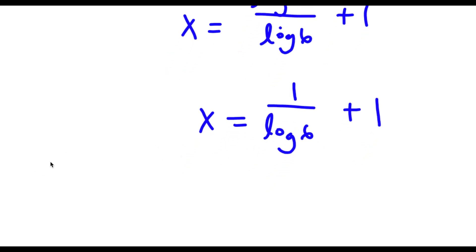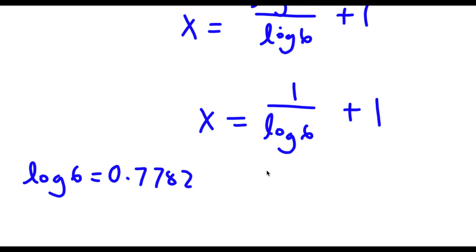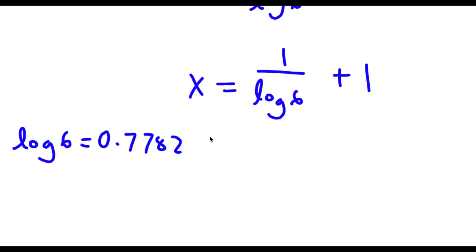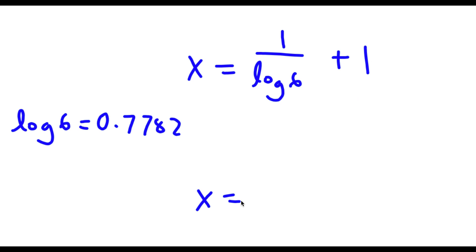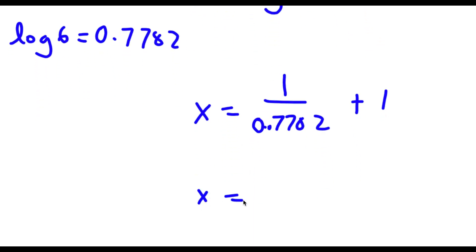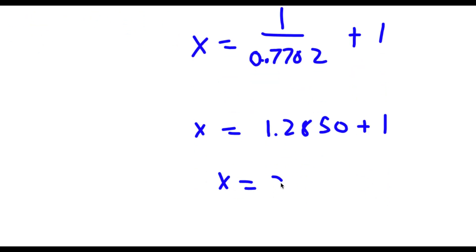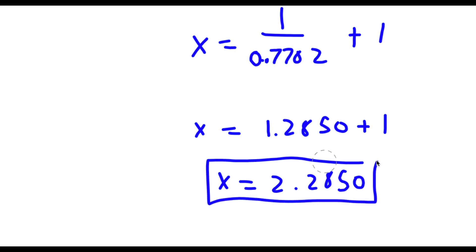So log 6 is equal to 0.7782. If I replace log 6 with 0.7782, I get x equals 1 over 0.7782 plus 1. Now 1 over 0.7782 is 1.2850, plus 1 this is equal to 2.2850. So this is my answer.